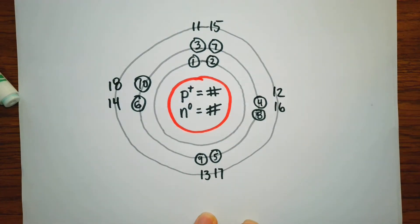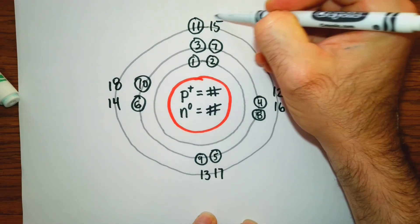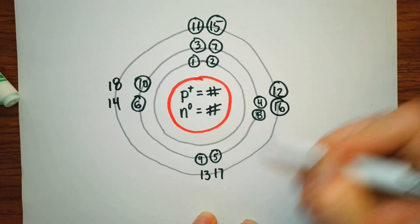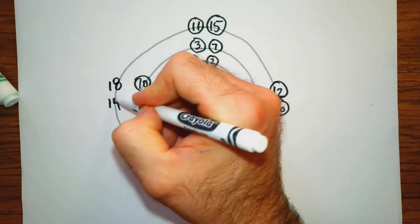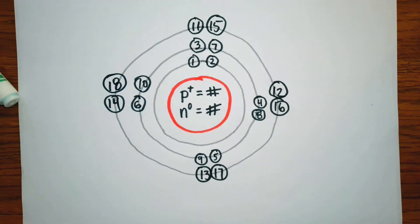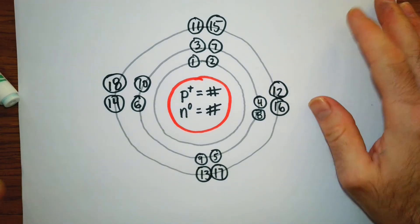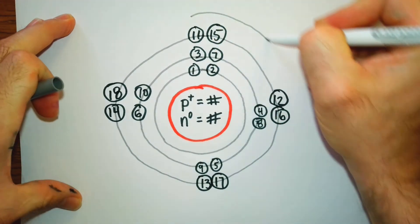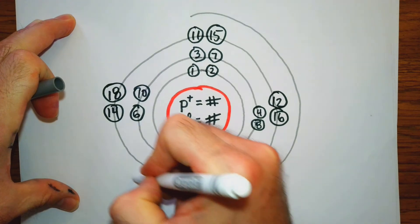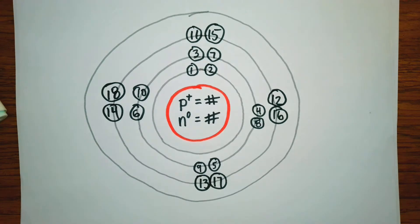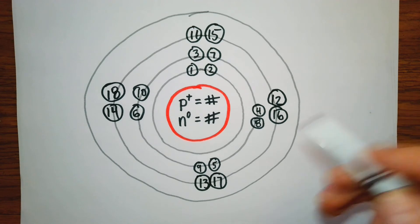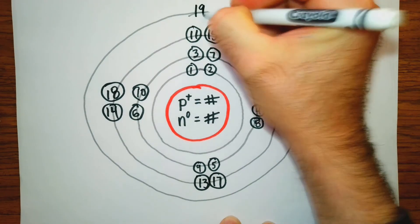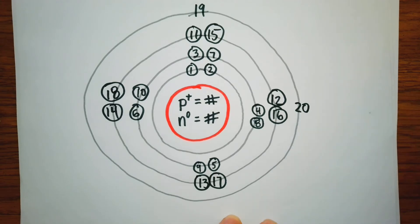We have eighteen electrons so far. Remember, when drawing Bohr models you don't need to draw the numbers — just put dots. Now we're at our fourth orbital, which we're going to say can hold a maximum of two. So we put our nineteenth electron here and our twentieth one there.